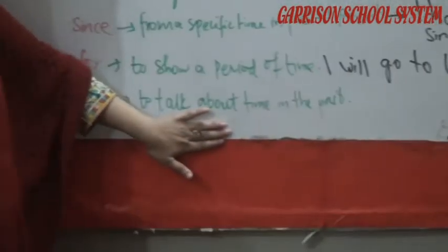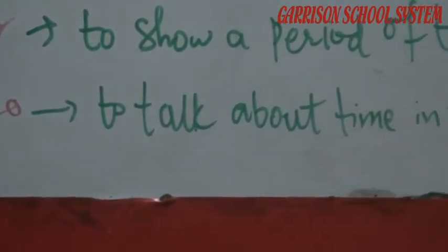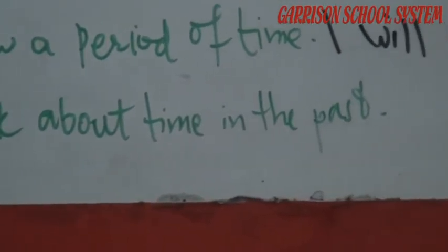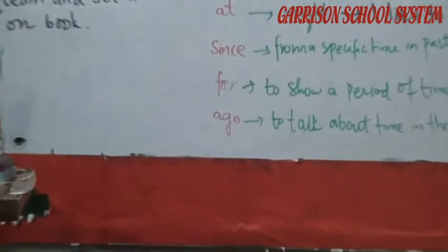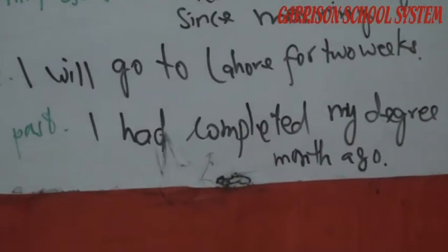Next is 'ago' — the last preposition of time. 'Ago' is used to talk about time in the past, like 'once upon a time,' 'long ago.' For past time we use 'ago.' For example: 'I had completed my degree a month ago' or 'a year ago' — meaning one month before, one year before.